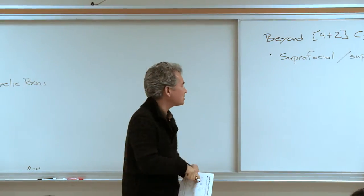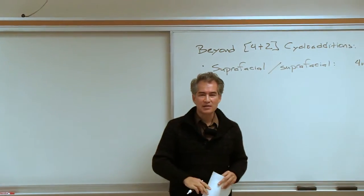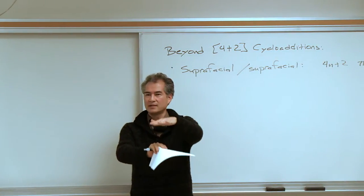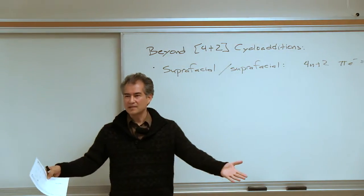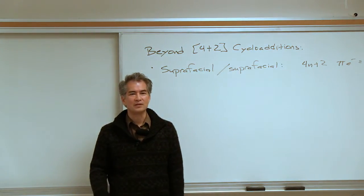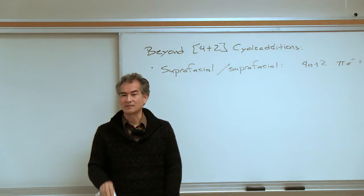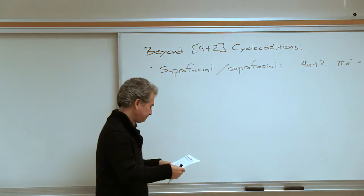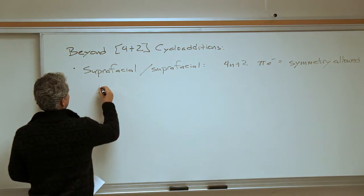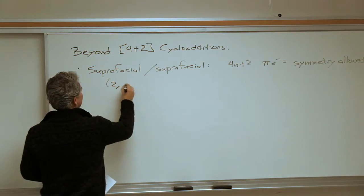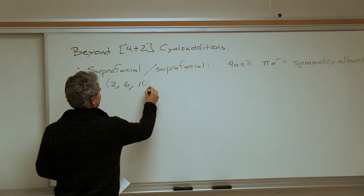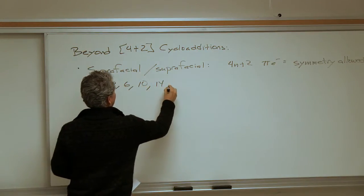I want to get across this point: if you think about cycloaddition reactions where one component comes down on the face of another in a simple face-to-face manner, for that to be an easy transition it needs to be superfacial and superfacial — where the top face reacts with the bottom face or vice versa. Looking at 4n+2, where n is some integer, these are the symmetry-allowed superfacial-superfacial pericyclic reactions.